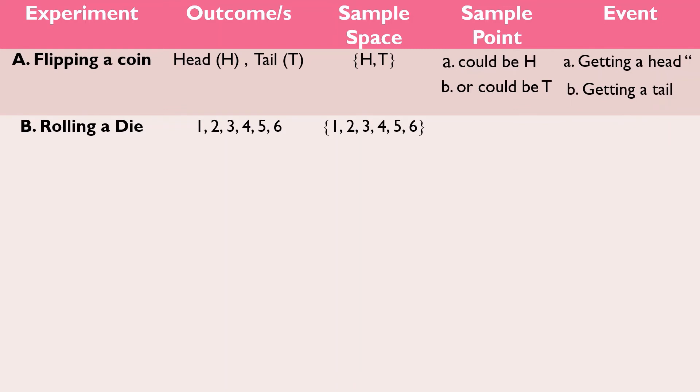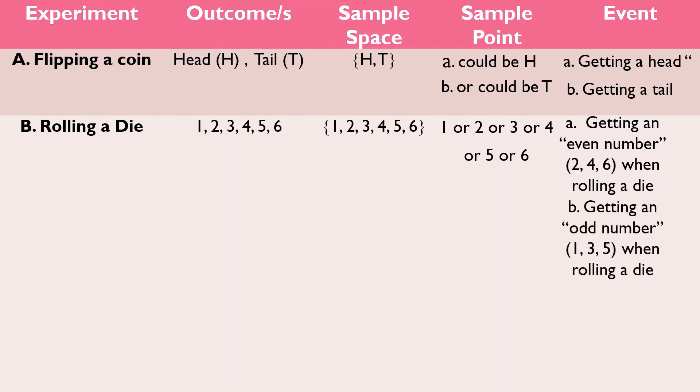For the next example, we have here the rolling a die. For the sample point, we can choose either 1, or 2, or 3, or 4, or 5, or 6. For the event, we have getting an even number. So, what are the even numbers? The 2, 4, or 6. Next, we can have getting an odd number. Another, getting a number that is greater than 4. And there are many more.